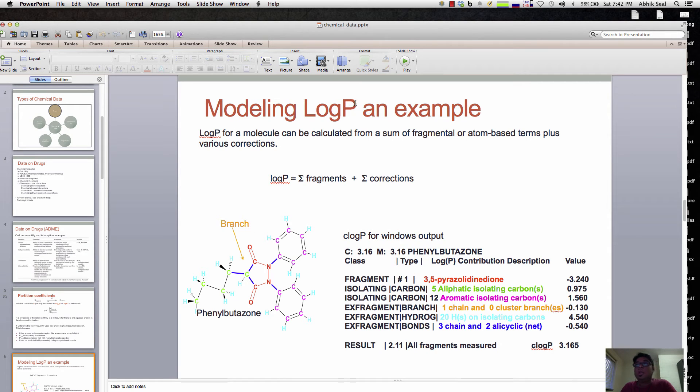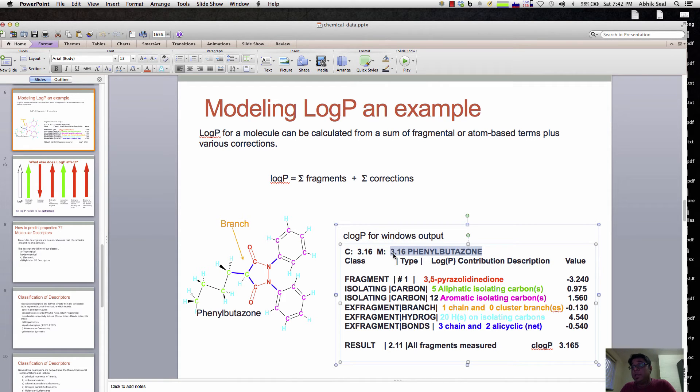How we model log P: it can be calculated as the sum of fragmental or atom-based terms of the chemical. For example, we're taking this phenylbutazone compound and fragment it, then add some corrections. The measured phenylbutazone log P experimental value is 3.16. There are various kinds of fragments with their own log P values. We fragment the compound, find the individual fragments' log P, sum it up, and calculate the final log P. The basic trick is we need to fragment it in a good way.